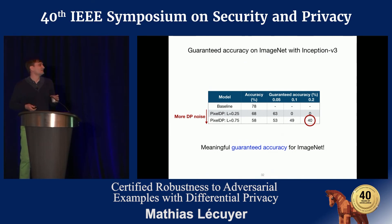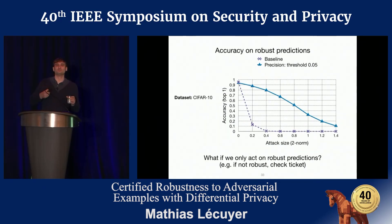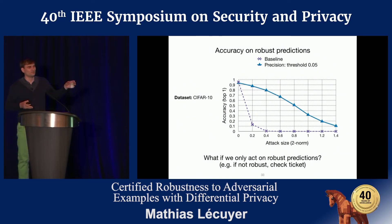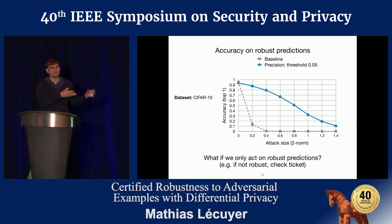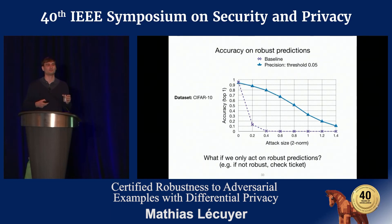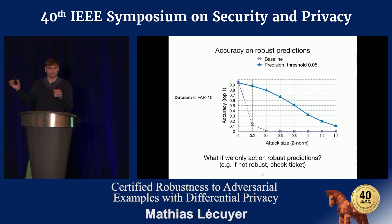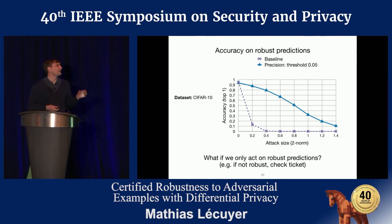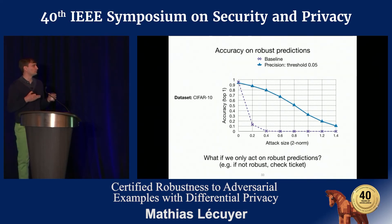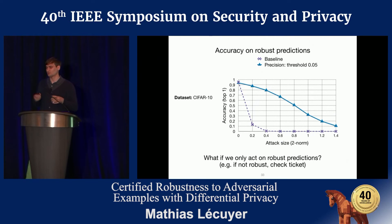Since we can measure the robustness of any single prediction, in the access control context we can say: if the prediction is robust, let the person in automatically; if not, bring a human into the loop. What we care about is the accuracy under attack only on those robust predictions. For a robustness threshold of size 0.05, compared to the undefended baseline, those robust predictions are much harder to attack — we still get around 80% accuracy for attacks up to size 0.4.